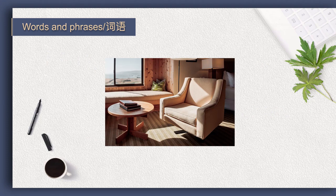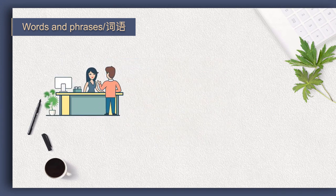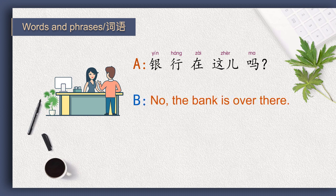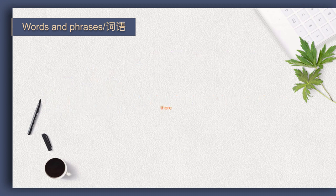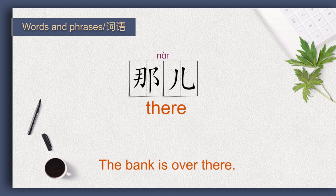Today we will learn how to use Chinese to say 'there.' 李先生问一位女士：银行在这儿吗？ Look at the woman's hand gesture and guess what she replied. She may say no, the bank is over there. 'There' in Chinese is 那儿。 So 'the bank is over there' in Chinese is 银行在那儿。